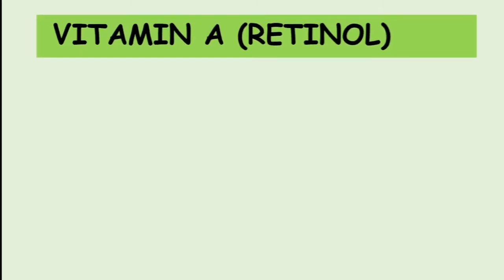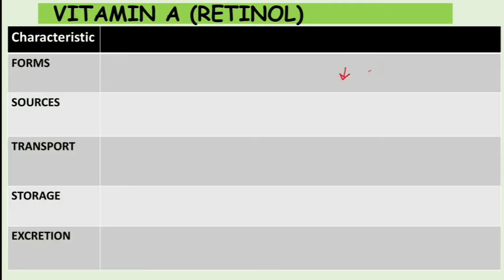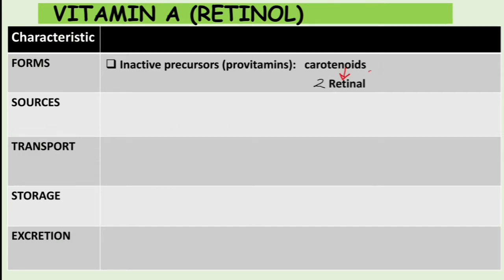Let's talk about Vitamin A, also known as retinol. The inactive form or pro-vitamin precursor is called carotenoids. Carotenoids can be cleaved into two molecules of retinol — that's activation. They can also be converted irreversibly to retinol, which is a reduction, or they can be oxidized to retinoic acid.